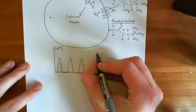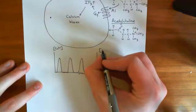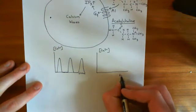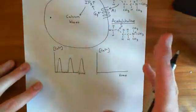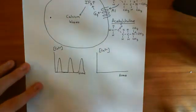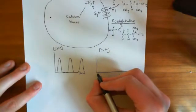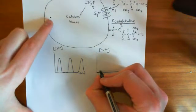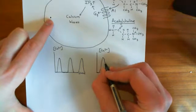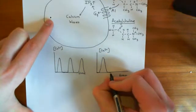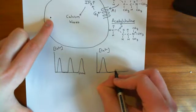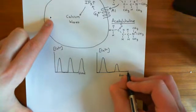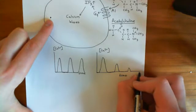Now let's do the same experiment but with extracellular calcium removed. Initially, you still get calcium waves — the first few spikes look the same. But then you get an interlude, and the next calcium peak is slightly lower. With each subsequent wave, the peak is a little lower still, and they gradually tail off until eventually they just stop.